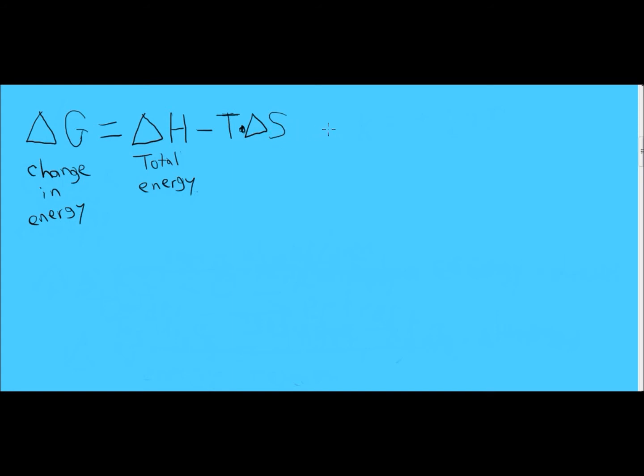Now T refers to temperature and delta S refers to the change in entropy. So if there's an increase in entropy or more chaos, delta S is going to be higher and this overall number is going to be lower. If there's less entropy, that is there's order, then delta S will be a lower number and this whole overall number will be higher.